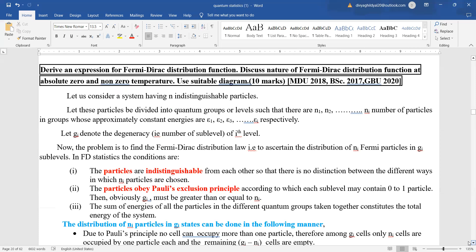For deriving an expression for Fermi Dirac distribution function, how will we proceed? We will consider a system which consists of n indistinguishable particles and these particles will be divided into quantum groups or levels such that there are n1, n2 till ni number of particles in groups having energies epsilon 1, epsilon 2, etc. And gi be denoting the degeneracy or the number of sub-levels of the i-th level.